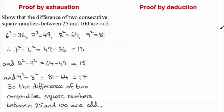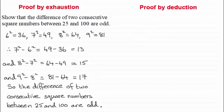Now let's have a look at proof by deduction. What I've got here is a similar question, where we've got to show that the difference of two consecutive square numbers is always odd. So unlike this example over here where we could write down all the numbers between 25 and 100, we can't hope to write down all the square numbers. So we've got to tackle this in a different way.